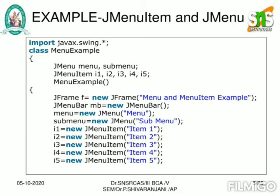I imported the Swing class inside my Java program and created a class called MenuExample. I am creating some objects for the class: JMenu for menu and submenus; JMenuItem objects I1, I2, I3, I4, and I5 for the menu items. Then I am creating a constructor named MenuExample. Inside the constructor, I am creating a window and setting its name to 'Menu and Menu Item Example'.